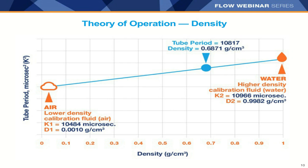Density calibration is performed at the factory on air and water. Meters filled with air result in a tube period called K1, and K2 for water. These two values are plotted against each other, making a straight line. D1 is the density of air and D2 is the density of water. Because this is a straight line and Coriolis is a linear device, we can measure anything heavier than water or lighter than air.